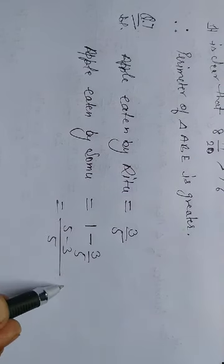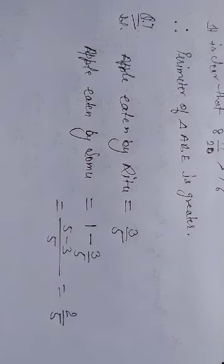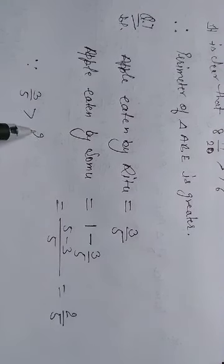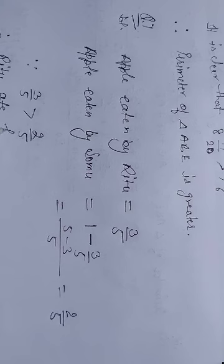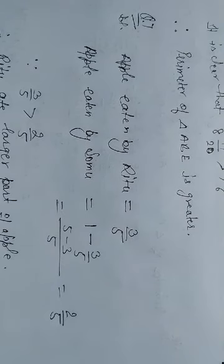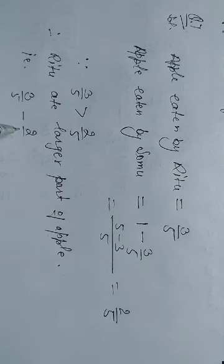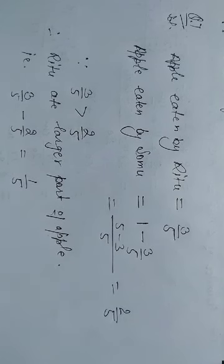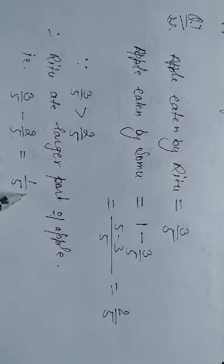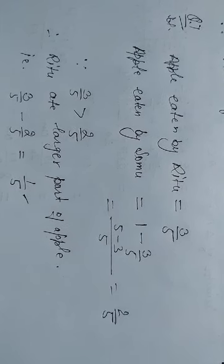There is 1 apple, so we subtract 3/5 from it. Taking LCM of 5: 5 minus 3 is 2/5. So Somu ate 2/5 part. Because 3/5 is greater than 2/5, therefore Ritu ate the larger part. That is 3/5 minus 2/5 equals 1/5. So Ritu ate 1/5 part more as compared to Somu.